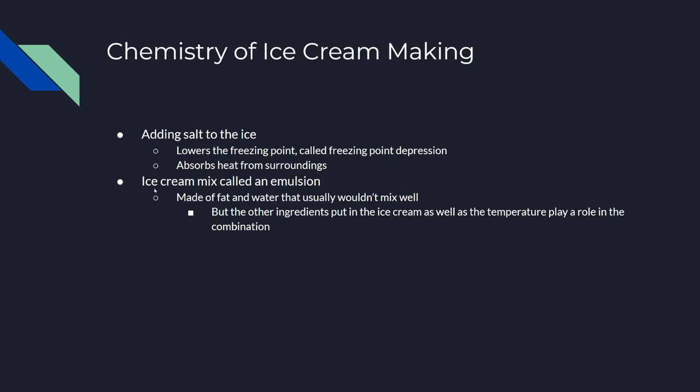Now a little bit about ice cream itself. Ice cream is a mixture called an emulsion. It's made of fat and water that usually wouldn't mix well, but due to ingredients like the sugar and other things you put in ice cream, as well as the cold temperature, it allows the fat and water to kind of attach to each other.